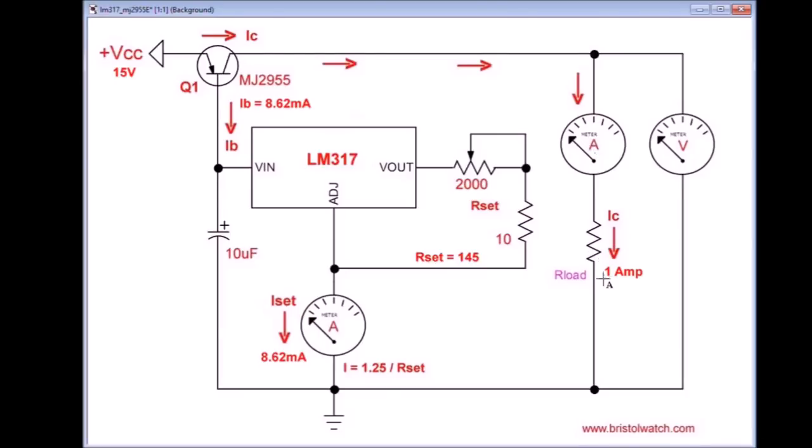So I adjusted the amp meter that's in series with the load. I adjusted the potentiometer over here to get a 1 amp current. At a 1 amp current, of course, I was measuring 8.62 milliamps over here.